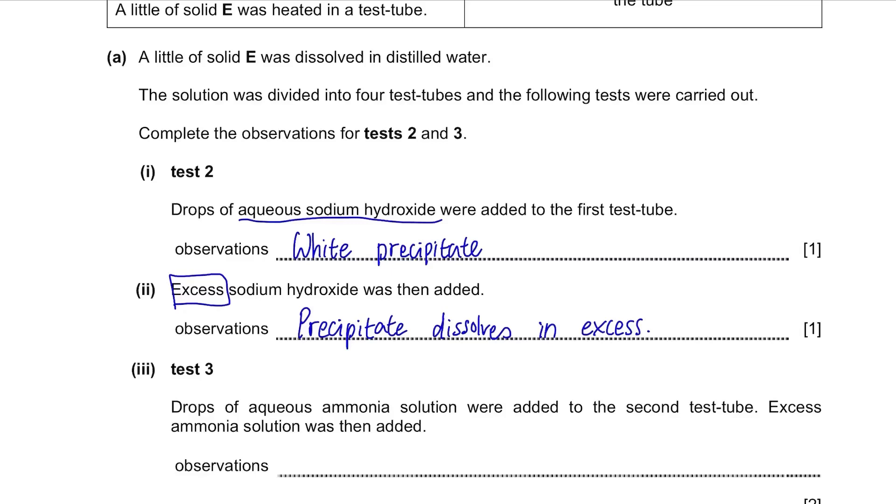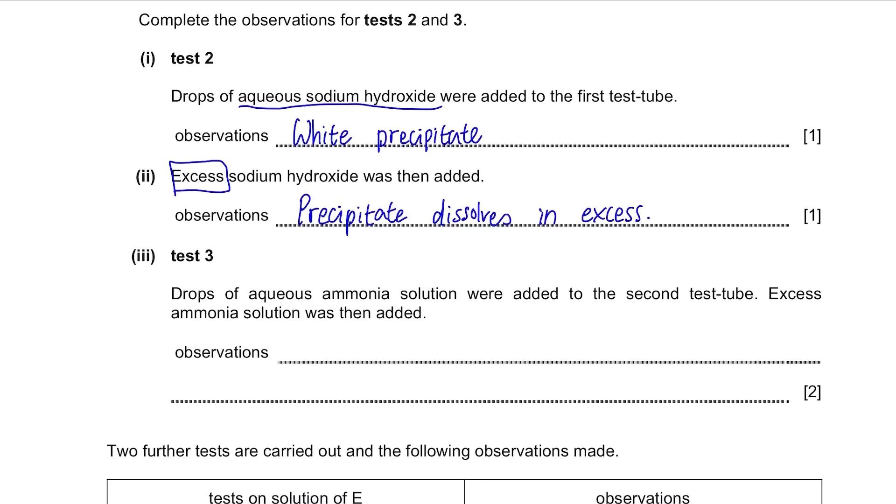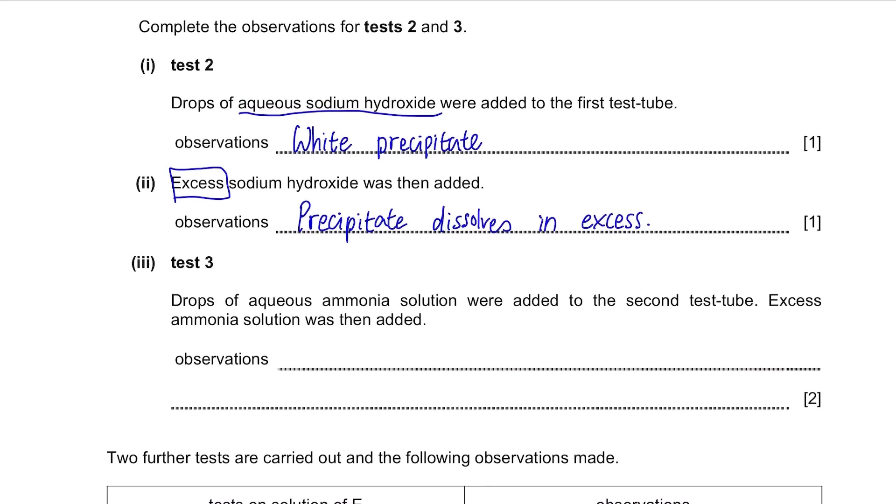Test 3. Drops of aqueous ammonia solution were added to the second test tube. Excess ammonia solution was then added. When you first add drops of ammonia solution to aluminum, again, white precipitate will be formed. But this time, even when excess ammonia solution is added, the precipitate will not dissolve and there will be no change.